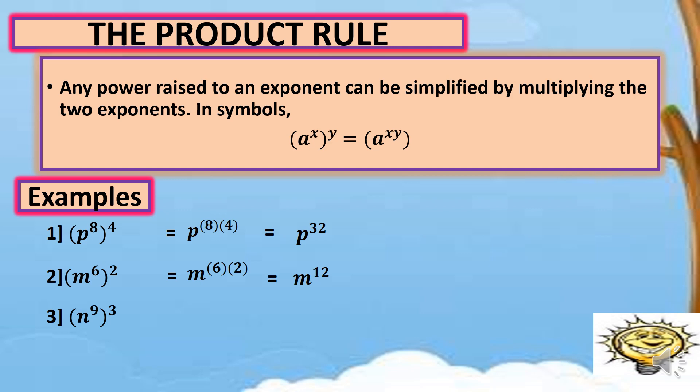For number three, quantity n raised to 9 raised to 3. Multiply 9 times 3, and that gives us the answer of 27, so n raised to 27. Last example, number four, quantity r raised to 10 raised to 7. Copy the variable r, then multiply the exponents — 10 times 7 is equal to 70. So our final answer is r raised to 70. That is all about the product rule.